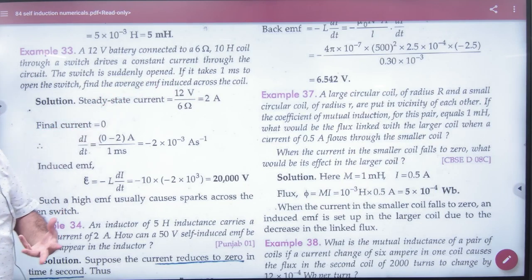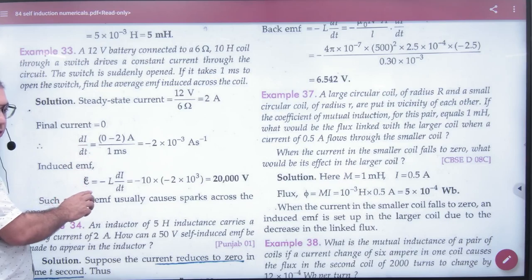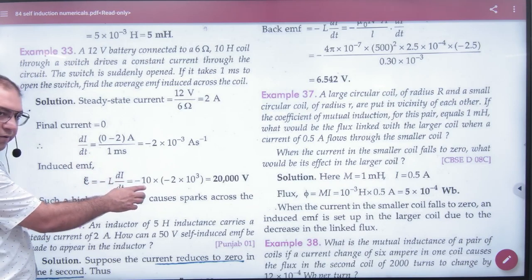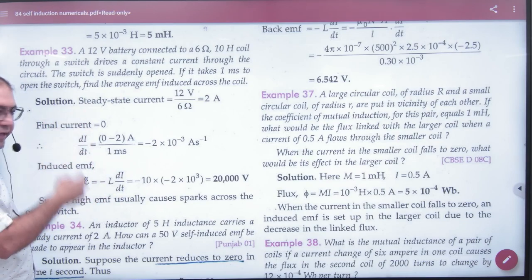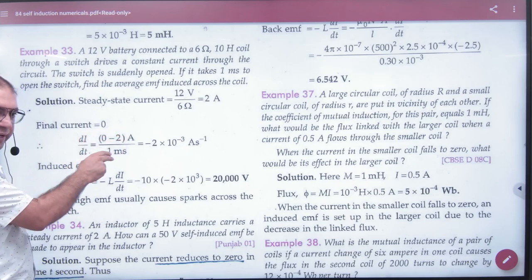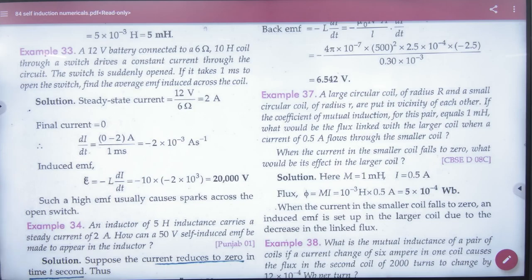What to find? Average induced EMF. Look at the EMF formula: minus L di/dt. Inductor you know is 10 henry. Current you know - initially it was 2, now it will be zero. So change in current is zero minus 2. Time you also know. So di/dt gives the answer.